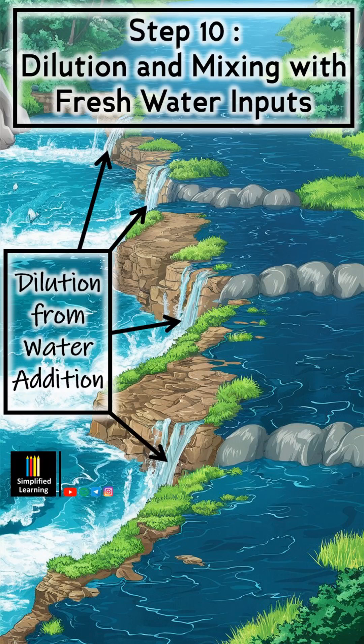The last step of self-purification of a river is dilution and mixing with fresh water inputs. Rivers often receive additional fresh water from tributaries, springs, and groundwater inputs. This fresh water further dilutes pollutants, enhancing the overall self-purification process and thus helping maintain the water quality of the river.